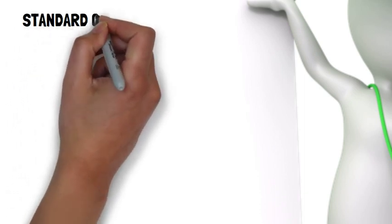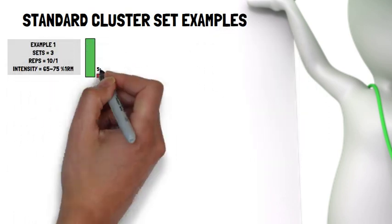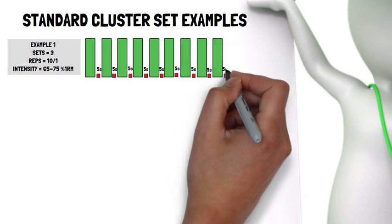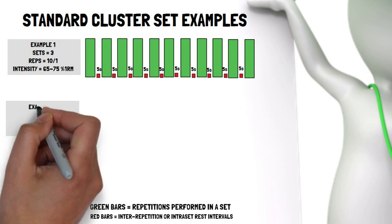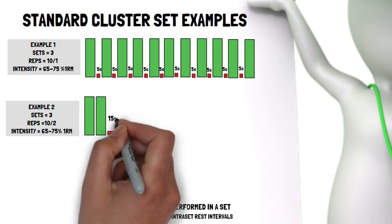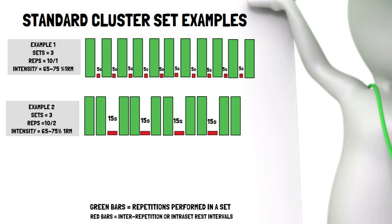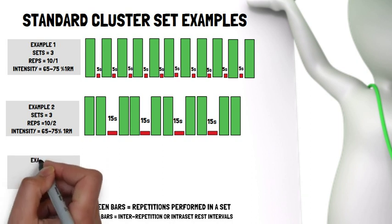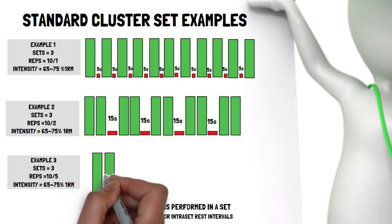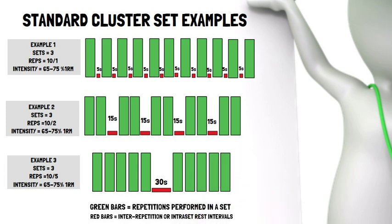In terms of what a standard cluster set might look like in a hypertrophy phase, here are 3 examples. Example 1: performing 3 sets of 10 repetitions at 65–75% of 1RM with intra-repetition rest intervals of 5 seconds. Example 2: 3 sets of 10 repetitions at 65–75% of 1RM with intra-set rest intervals of 15 seconds after every 2 reps. Example 3: 3 sets of 10 repetitions at 65–75% of 1RM with intra-set rest intervals of 30 seconds after 5 repetitions.